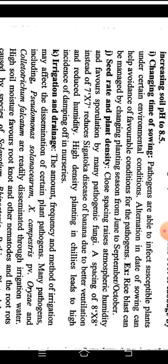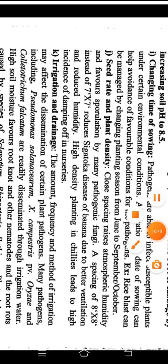Irrigation and drainage also play a role. The amount, frequency, and method of irrigation may affect the dissemination of certain plant pathogens. Many pathogens including Pseudomonas solanacearum, Xanthomonas campestris pv. oryzae, Colletotrichum falcatum, and others are rapidly disseminated through irrigation water. High soil moisture favors root-knot nematodes and root rot caused by various species of Sclerotia, Rhizoctonia, and Fusarium. These different practices can be applied for the management of eradication of pathogens and exclusion of pathogens. Thank you.